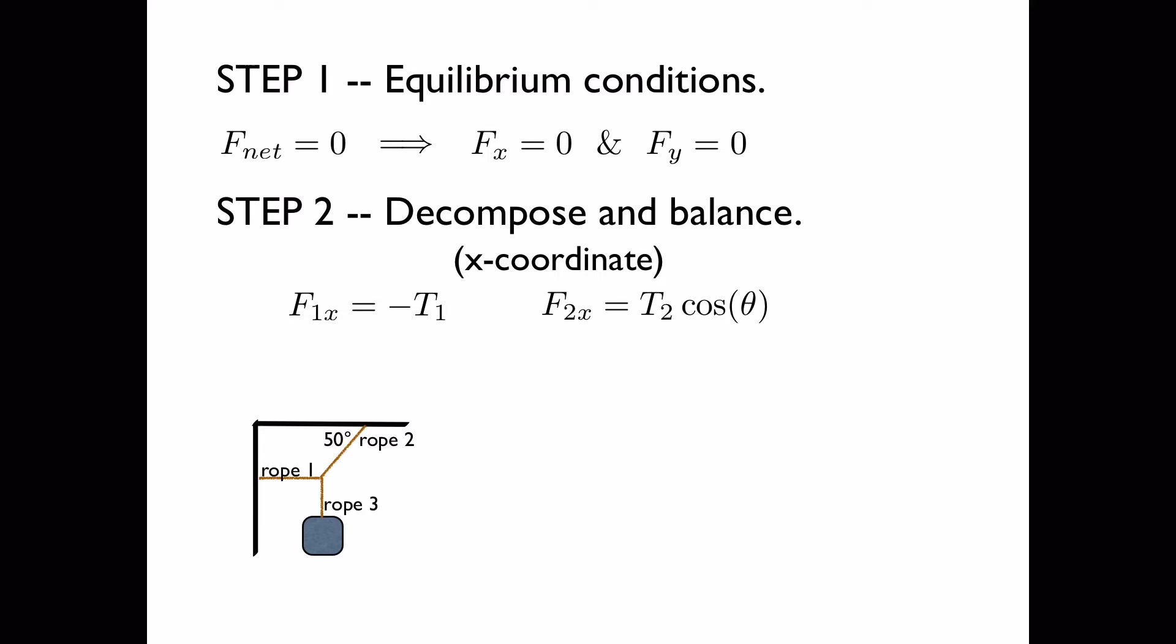Force 2, which pulls the block in the right direction, is equal to the tension in rope 2 times the cosine of the angle 50 degrees, because the horizontal component is adjacent to the angle. And force 3 has an x component equal to zero, because it's in the vertical direction.